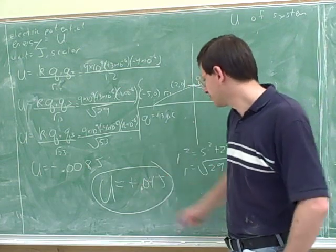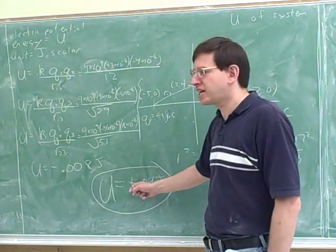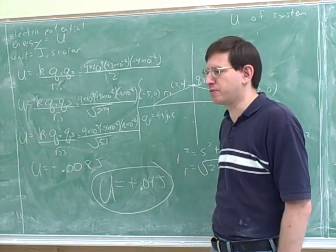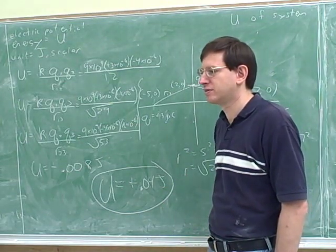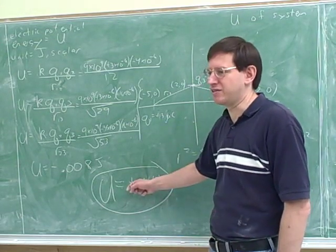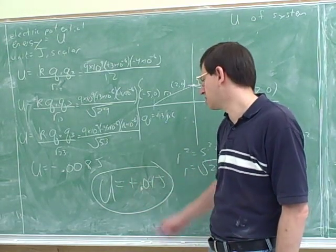So if this had come out positive, now if this had come out positive, would that mean that the particles preferred to be infinitely separated or they preferred to be close to each other? Separated. Yeah. They preferred to be separated because when they're separated, they have zero energy. Right? An infinite separation, u would be zero.